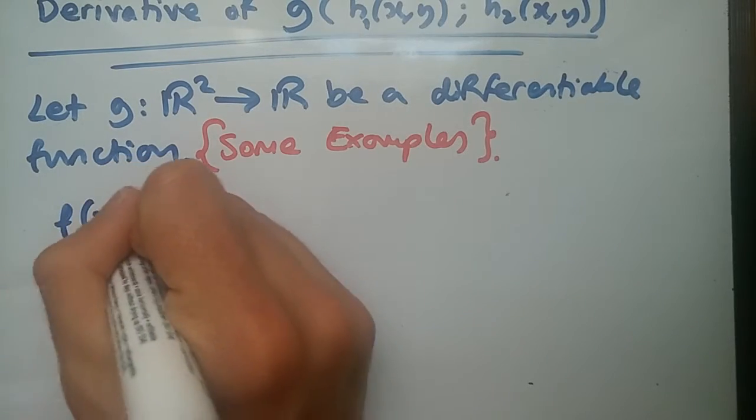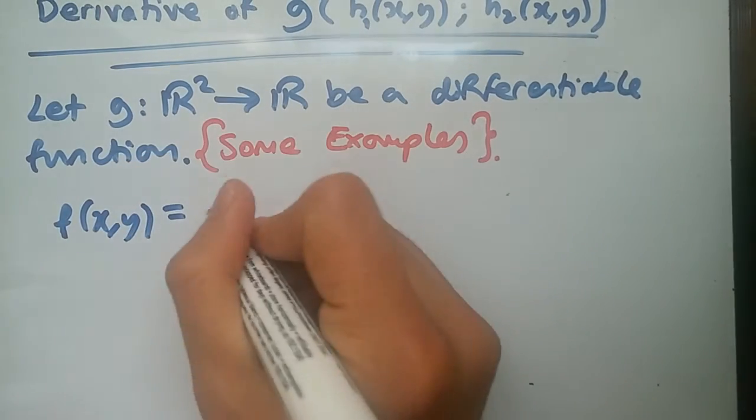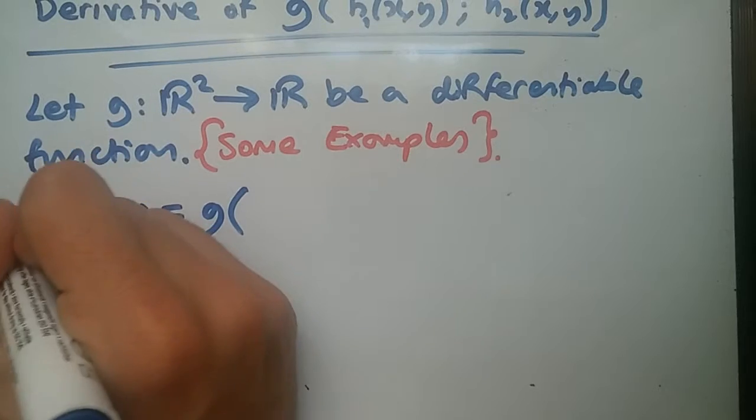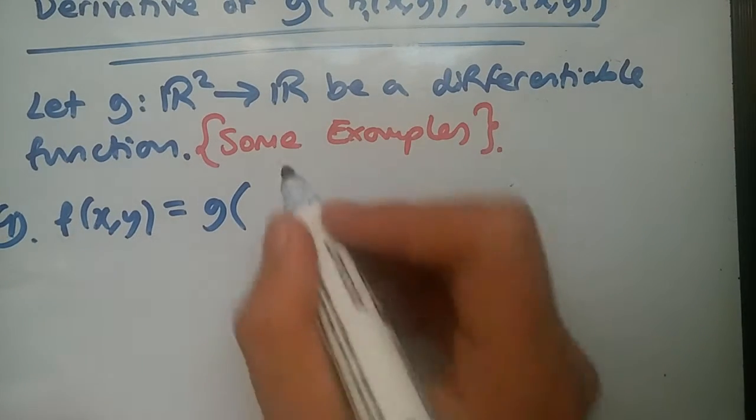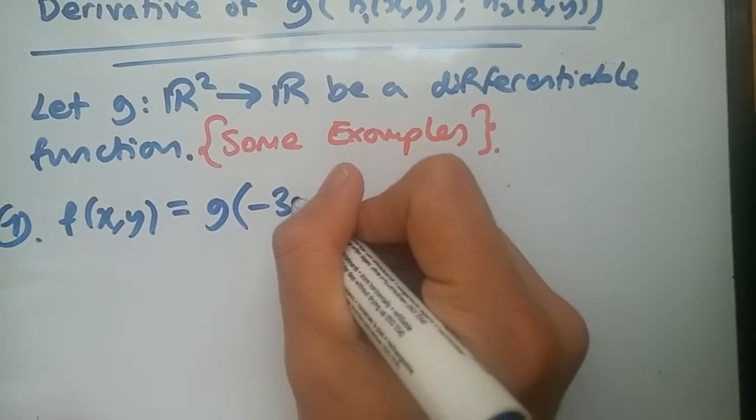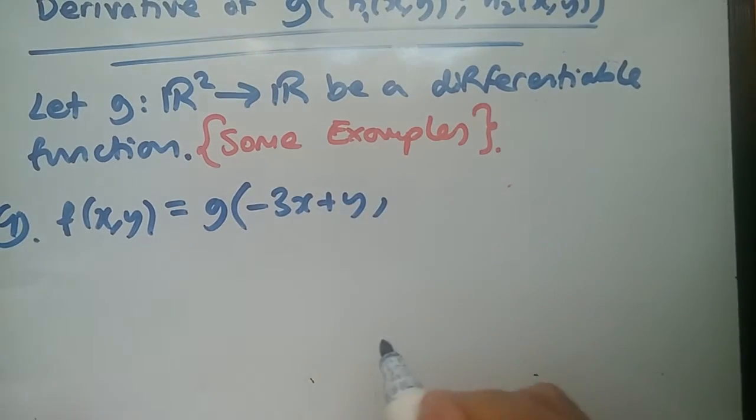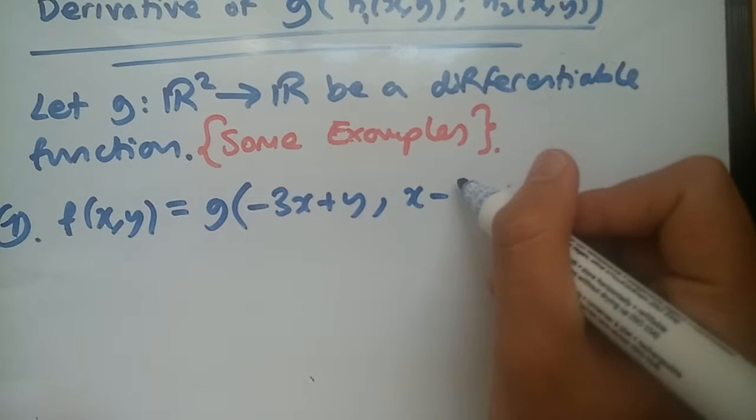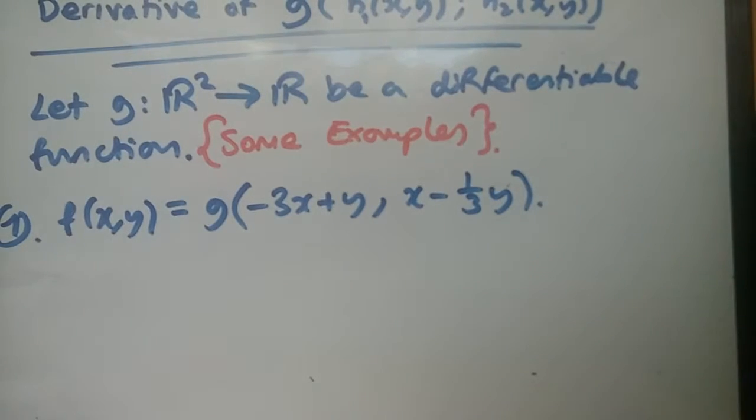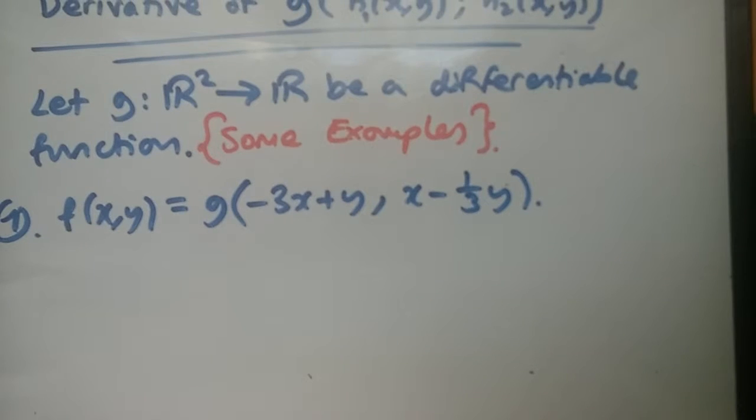Now suppose I define, you know that f(x,y) equals g, so this is example one. f(x,y) equals g of -3x plus y on the first part, and the second part x minus 1 over 3y.